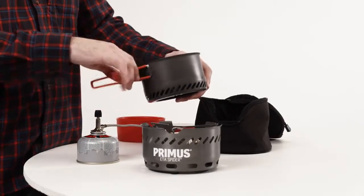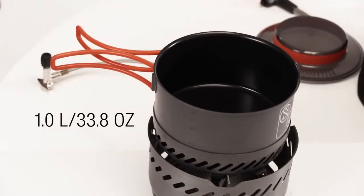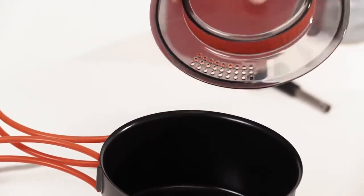The pot has an integrated heat exchanger and a ceramic non-stick coating with better durability than conventional non-stick materials, and is better for the environment. The see-through plastic lid has an integrated colander.